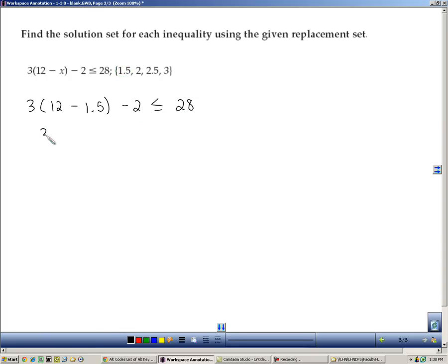And doing algebra, 12 minus 1.5. PEMDAS says multiply first, so 3 times 10.5. Minus 2 is 29.5. Is that less than or equal to 28? And the answer is that it's not, so we can cross that one off the list.